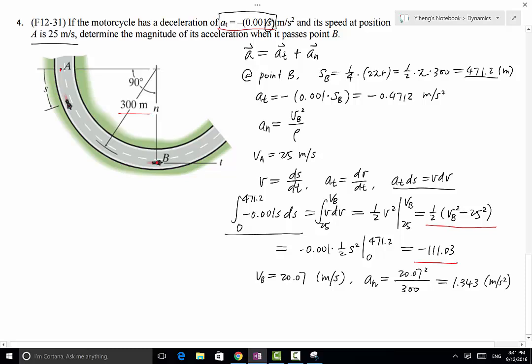Therefore, as a result, a equals to the square root of a_t squared plus a_n squared, which is a_t is -0.4712, a_n is 1.343. As a result, a equals to 1.42 m per second squared.